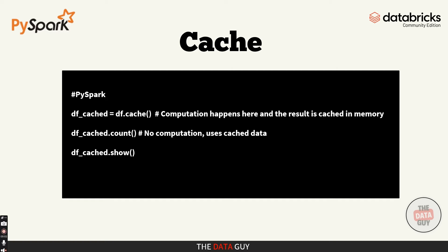Let's start with cache. When you call the cache method on a data frame or RDD, you're telling Spark to store the data in memory after it's computed the first time. The next time you perform an action on that data frame, Spark can just pull the data from memory instead of recomputing everything. This is super useful when a data frame is used in multiple actions or stages of your pipeline. For example, if you have a data frame used for both count and show, normally Spark would recompute everything twice, but if you cache it, it only computes once and keeps it in memory. As you can see on screen, when you use cache, the result is cached in memory, so the next time you perform any action there will be no recomputation — it will use the cached data.